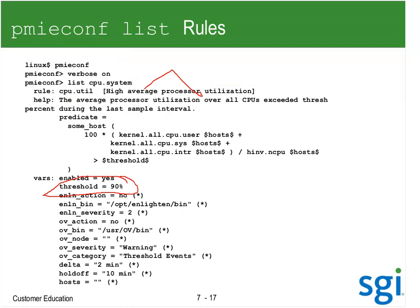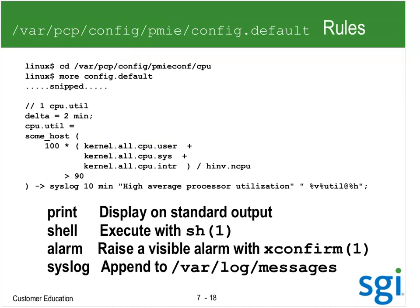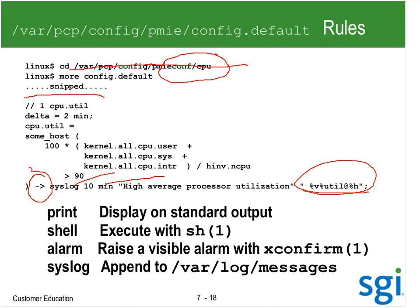In /var/pcp/config/pmieconf, those are the templates for the rules. The default action is to write to syslog once every 10 minutes that you've got high CPU utilization. You can change that alarm to a GUI X11 popup, run a script, or write to the serial console. I could write a rule to say if context switches go above a million, run ps -e and write a message to the console. You've got four actions available when an alarm goes off with pmie.